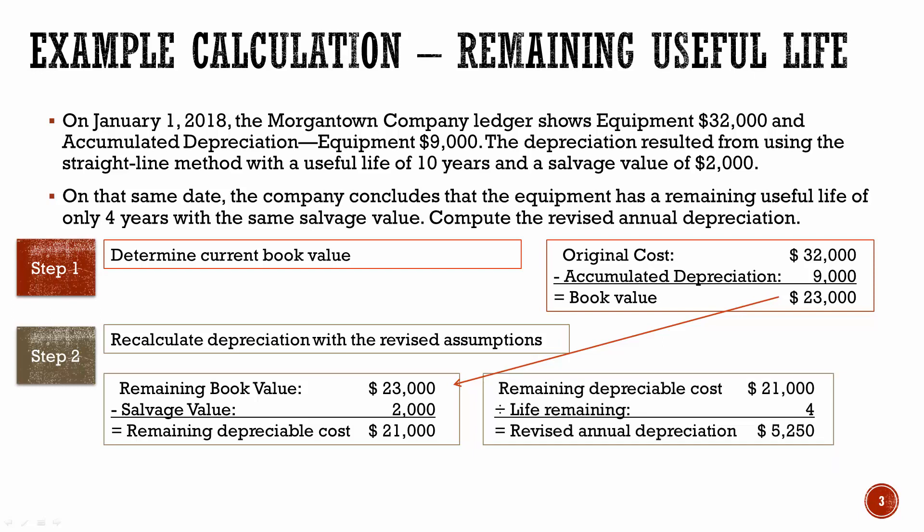Then we can take that remaining depreciable cost, divide it by the four years' remaining useful life, and now we know that the new annual depreciation amount is $5,250. That means that from now on — January 1, 2018 and on — for the next four years, the depreciation will be $5,250.